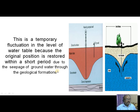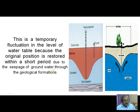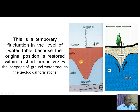However, this fluctuation in the level of water table is temporary, because it reaches the original position after a short period, once again due to seepage of groundwater through the geological formations. The fluctuation takes place when water is pumped out continuously, and afterwards it reaches the original position due to the seepage of groundwater.